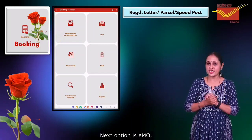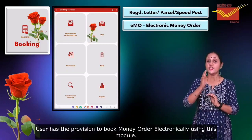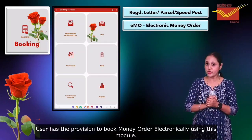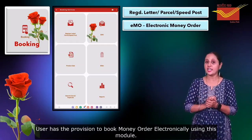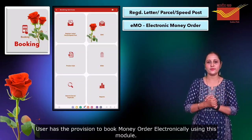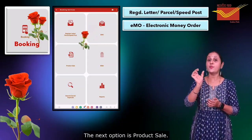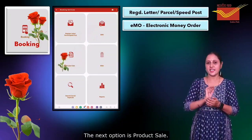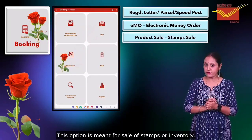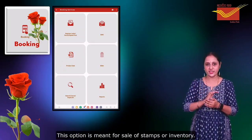The next option is EFO. The user has a provision to book the money order electronically using this module. The next option is Product Sale, which is meant for the sale of stamps or inventory.